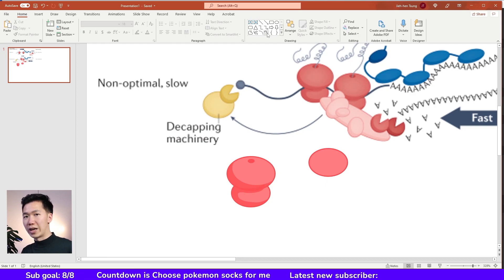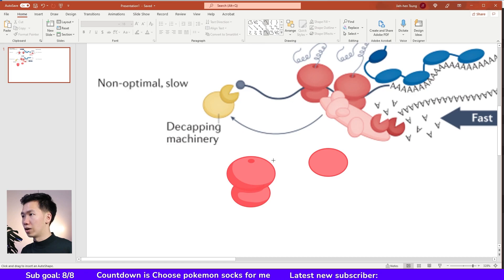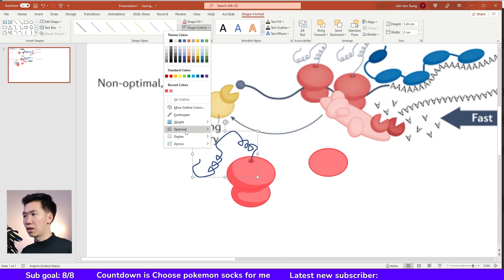Now we will create the polypeptide. Let's grab our curve tool and just draw a squiggly line like this. Once you're done, press enter. Then you can adjust the thickness and the color of the stroke as you please.